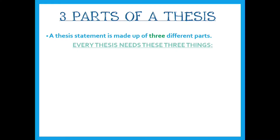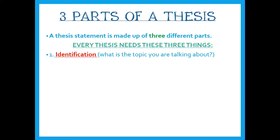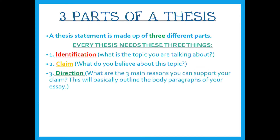The first part of a thesis statement is identification — what is the topic that you are talking about? We have to identify the topic and make sure our readers know what's going to be discussed. The second part is a claim: what do you believe about this topic? And then the third is the direction: what are the three main reasons you can support your claim? This is basically the outline of the body paragraphs of your essay. So first we find identification, we make a claim, and then we see the direction in which we're headed.